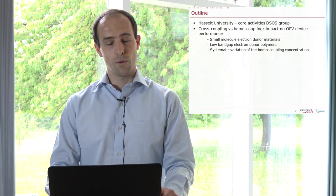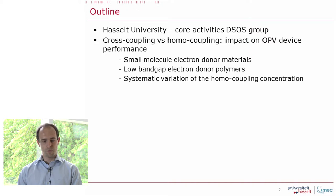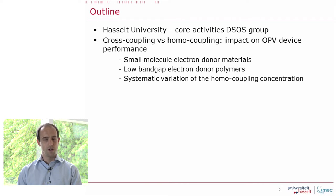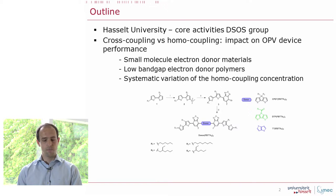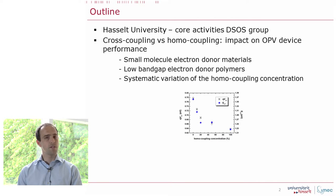First of all, I will very briefly introduce you to our university, Hasselt University in Belgium. Then I will move on to the main topic of the talk, which is about cross-coupling versus homocoupling and the impact of homocoupling defects on OPV device performance. The talk has three major parts: small molecule electron donor materials, low band gap electron donor polymers, and systematic variation of homocoupling concentration and its effect on organic solar cell performance.